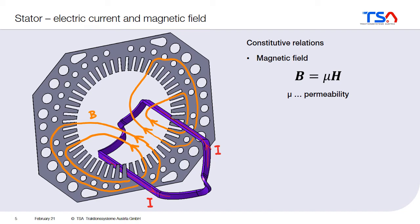Also the material is important. Here we see a cross section — again we have the coil with the current, now in this direction. In orange you see the magnetic flux lines. These magnetic flux lines, because of the material property — the high permeability of the magnetic steel sheet — the magnetic flux goes through the magnetic sheet. It does not go through the cooling ducts, which consist of air, and it also does not go through the slots. The slots consist of air, and the conductors in the slots are made of copper, which also has a low permeability. So the flux basically goes only in the magnetic steel sheet.